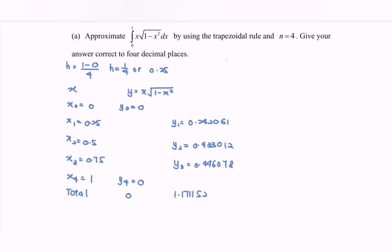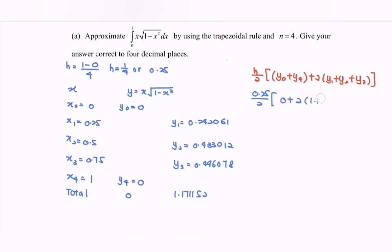By referring to the trapezoidal formula: h over 2, bracket, y naught plus y₄, plus 2 multiplied with y₁ plus y₂ plus y₃. Substituting the values, we have 0.25 over 2, bracket 0 plus 2 multiplied by 1.171152. By referring to the calculator, we have the value 0.292788. Correct to 4 decimal places, the approximate value is 0.2928.